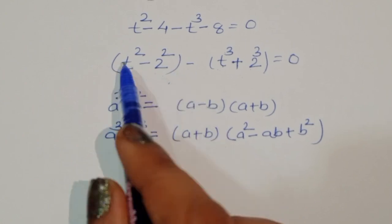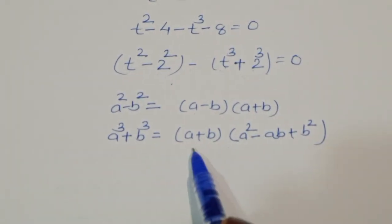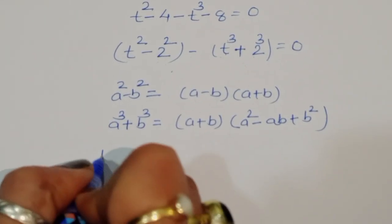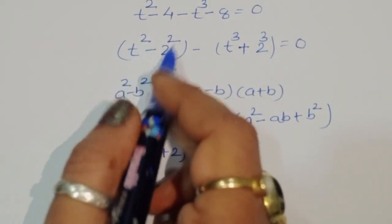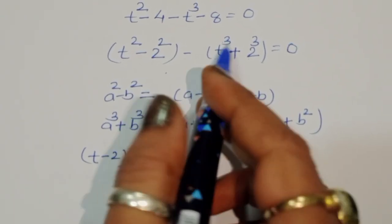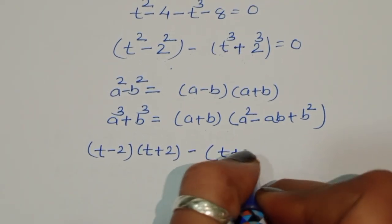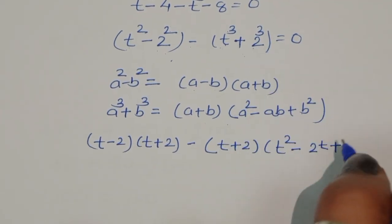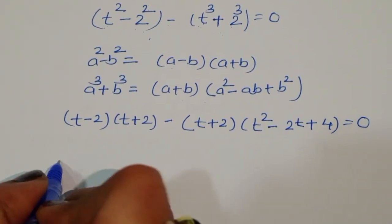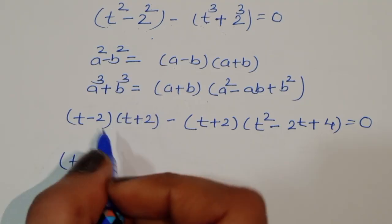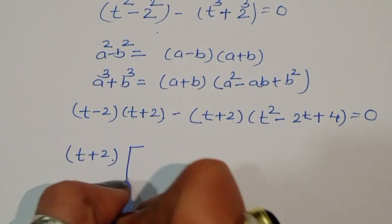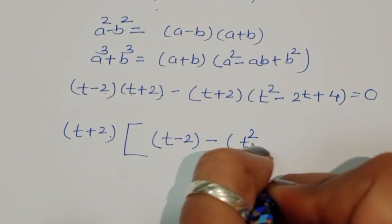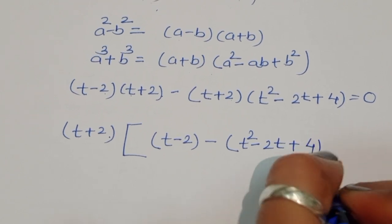Substituting: t squared minus 2 squared becomes (t minus 2)(t plus 2), and t cubed plus 2 cubed becomes (t plus 2)(t squared minus 2t plus 4). So the equation becomes (t minus 2)(t plus 2) minus (t plus 2)(t squared minus 2t plus 4) is equal to 0.